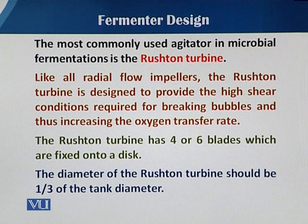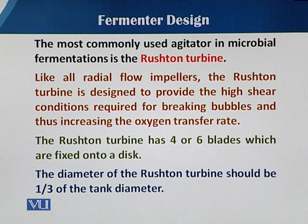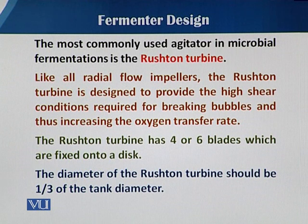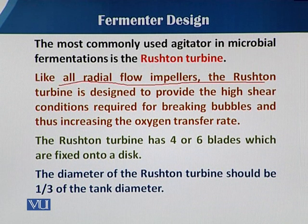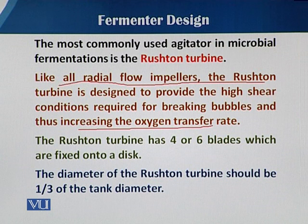The Rushton turbine impellers are just like the radial flow impellers, because there is only a small difference. Mostly in fermenters, they are fabricated and designed with Rushton turbine impellers. Radial flow impellers are mostly used when we need a high shear effect — when there is a need for more rupturing of the air bubbles — and that is mostly in the case of bacterial fermentations.